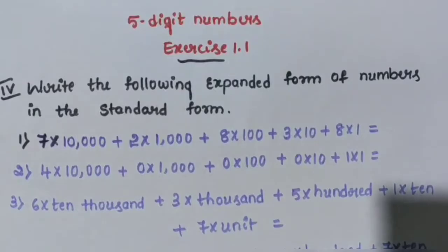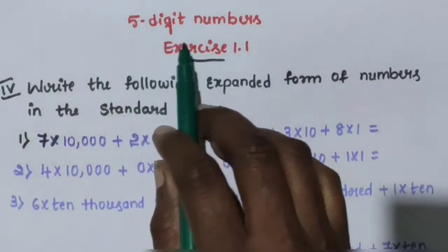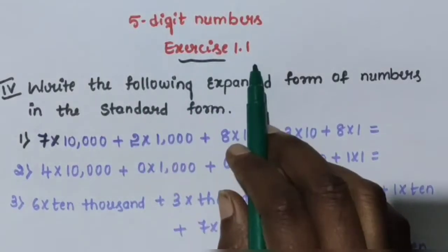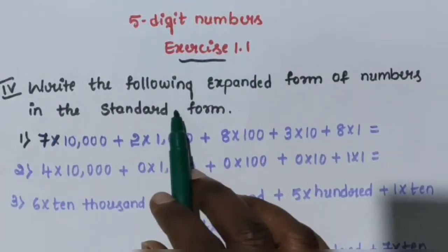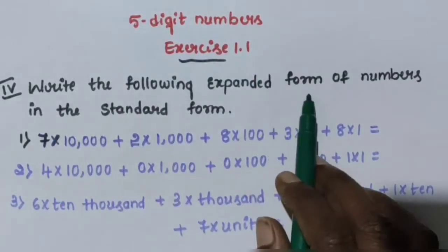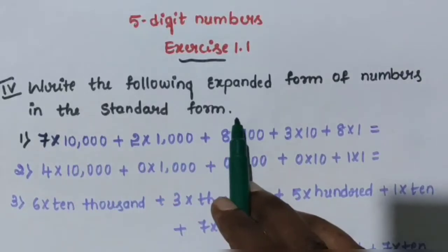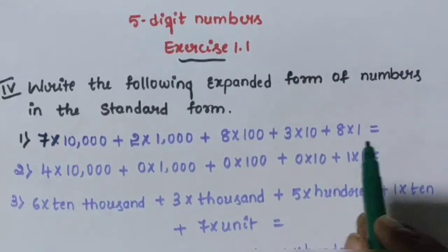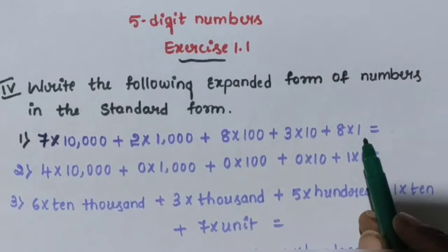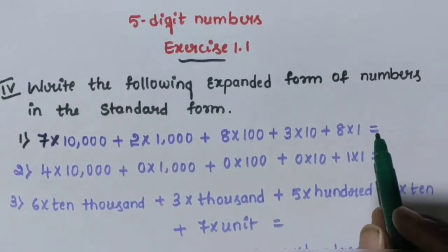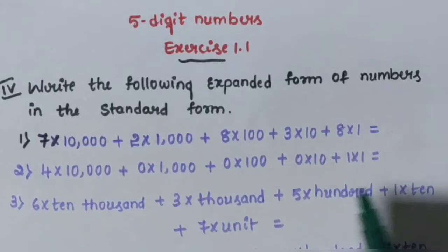Hi children, today I explain about the topic 5 basic numbers, exercise 1.1, fourth minute. Write the following expanded form of numbers in the standard form. So this is an expanded form — already expanded form — then write in standard form of the numbers.